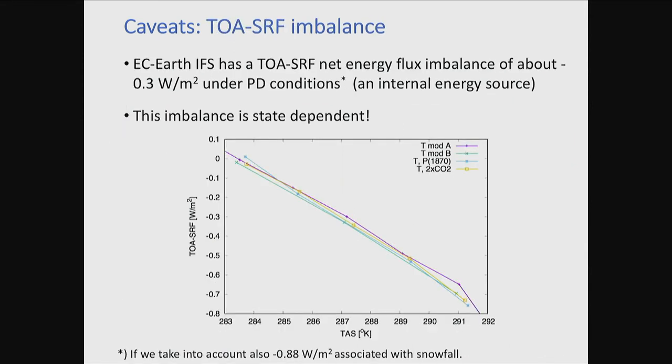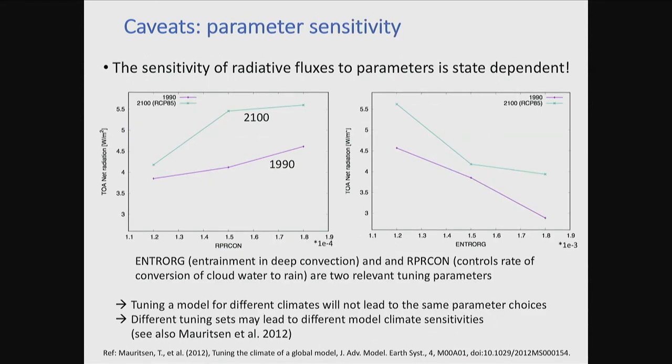The radiative fluxes themselves are state dependent. This shows you the same sensitivity plots I showed before, but done at present time and done in a future scenario, say in the year 2100. The main point is it's a much warmer planet then. You could say that these sensitivities are different, and again we have a problem.